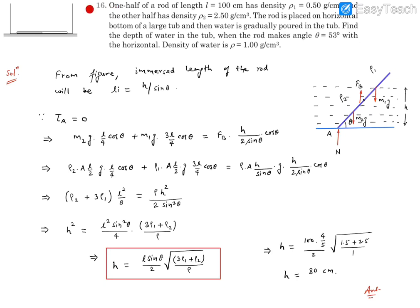Here is question number 16. It reads: one half of a rod of length 100 centimeter has density ρ₁ which is 0.5 and the other half has density ρ₂ which is 2.5 gram per cc.